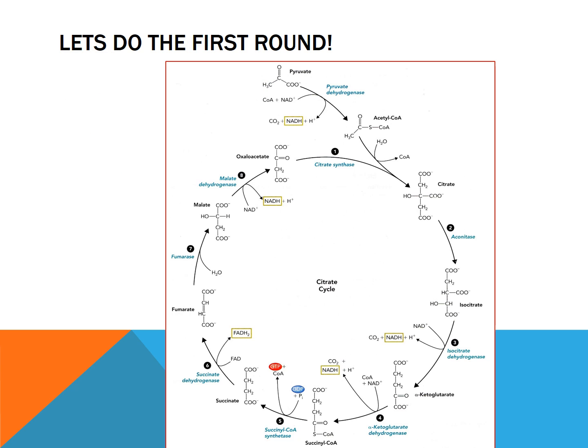So here we'll do the first round. We have the methyl carbon circled in red. As you can see, with pyruvate dehydrogenase nothing will happen to that methyl carbon and it'll still be the methyl carbon on acetyl-CoA. Then when it's added into citrate, it's going to be added right where the red circle is, so it's going to be another methyl just in between. Now in this third enzyme of the citric acid cycle, it won't leave as carbon dioxide because the carbon dioxide that ends up leaving is the middle carboxyl — which is not the one that's radioactively labeled — so it's not going to leave as carbon dioxide.